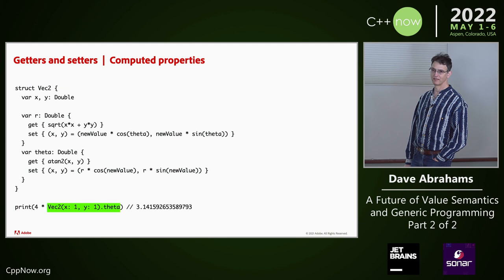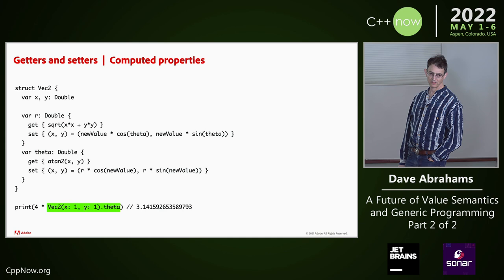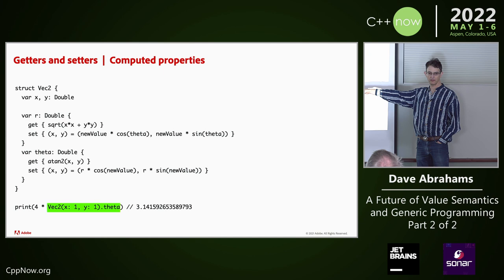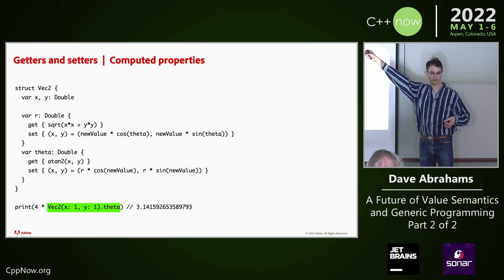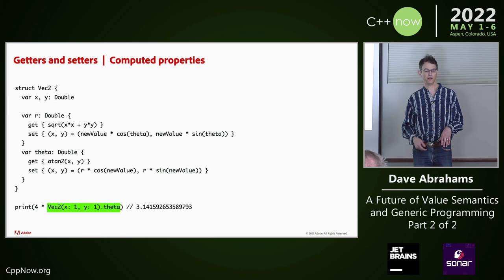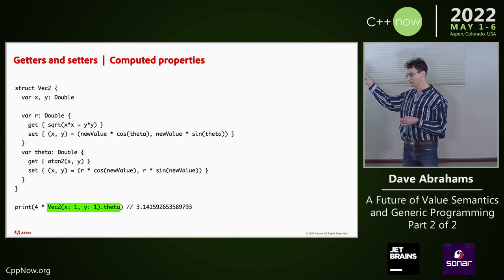Does this imply that you can update R without updating theta? You can update R without updating theta — theta isn't meaningful in that case. If you like the polar representation, it makes the vector longer. R is the length of the vector. It's a little funky because of floating point — when you update R, theta's going to change a little bit, maybe. But in principle, it works.